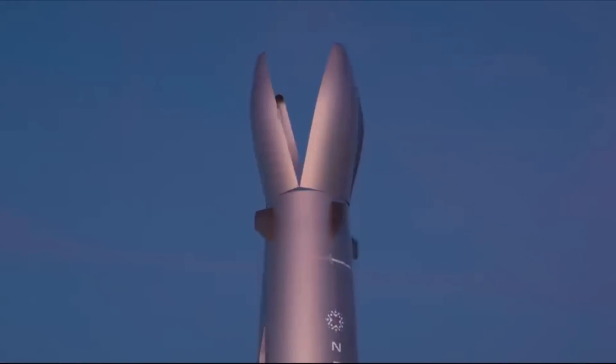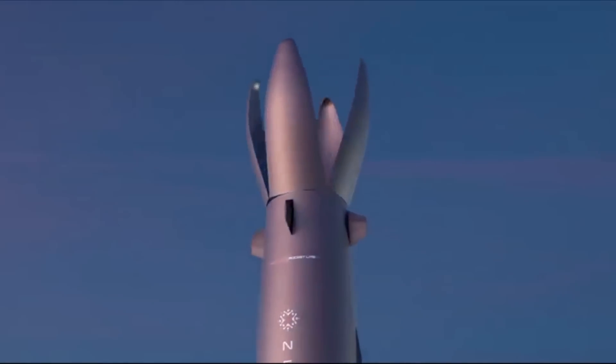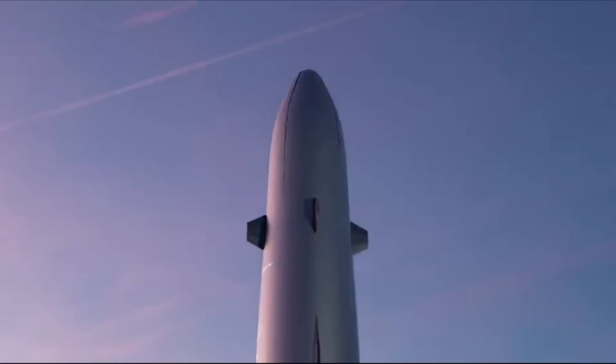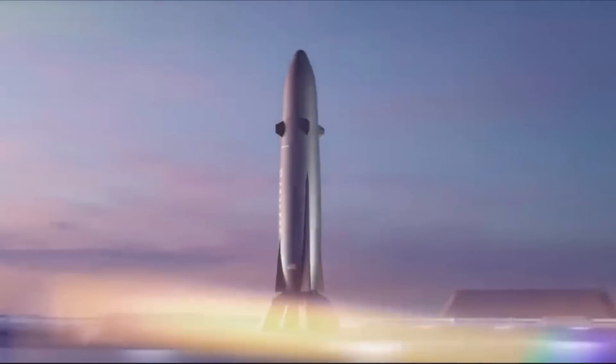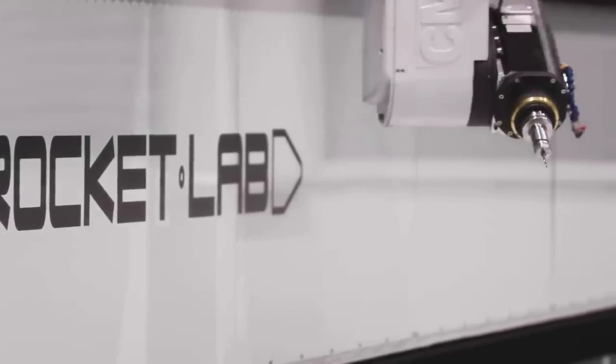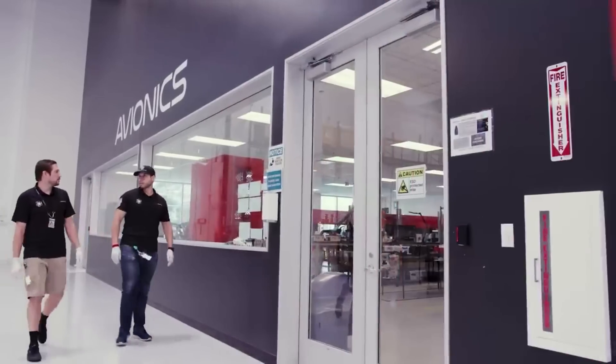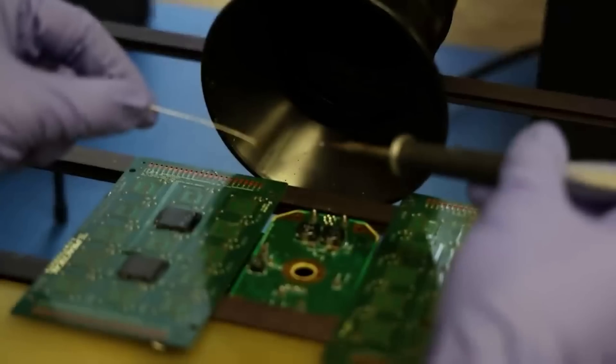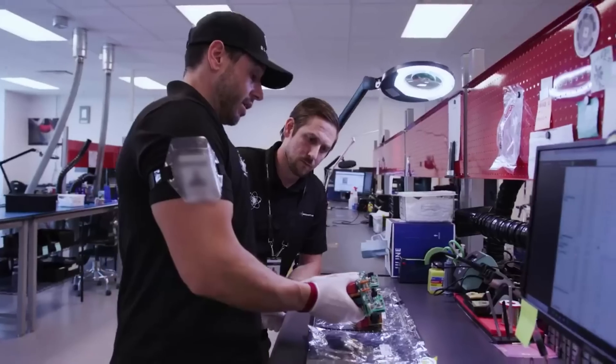To add on to the benefits, Rocket Lab also secured a capital investment incentive from Mississippi to further develop the facilities and infrastructure at Stennis for Neutron. They did this because by expanding Stennis Space Center to include the Archimedes test complex, Rocket Lab is expected to create dozens of new jobs and make significant capital investments in the state of Mississippi.